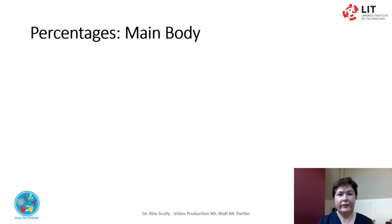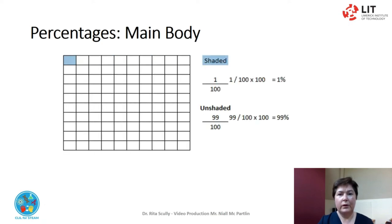In understanding percentages, it helps to imagine the whole broken into one-hundredth parts. Percentages are similar to fractions and decimals — they are another way of writing fractional parts, but they always give the number of parts out of one-hundredth. One is shaded out of one-hundredth: one over one-hundredth, or one per cent. Ninety-nine are unshaded: ninety-nine over a hundredth, or ninety-nine per cent. So it is important to always know what one-hundredth refers to each time.